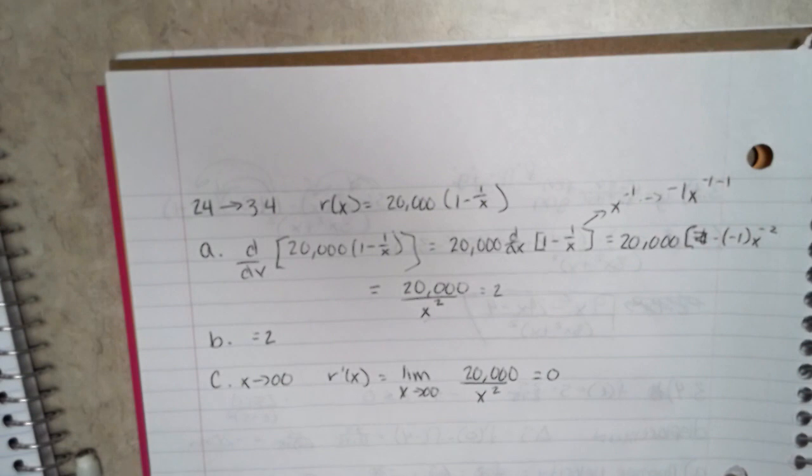And this means that the total revenue will flatten out when a sufficiently large number of washing machines are produced. This is because the increase in revenue, r'(x), will approach 0.